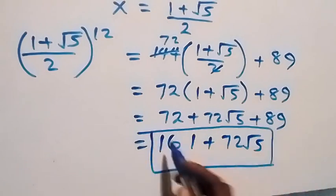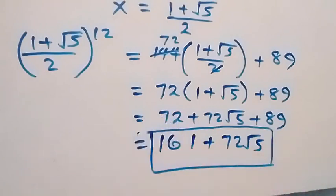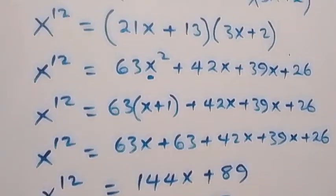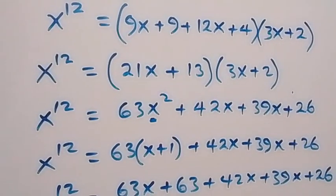So we have the final answer to this given problem as 161 plus 72 root 5. Thank you for watching. Don't forget these steps. Subscribe to my channel for more exciting videos. See you next class and bye for now.